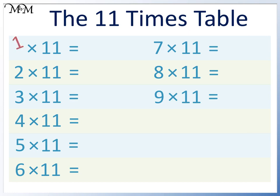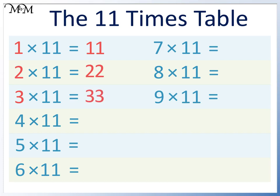To do 1 times 11, we repeat 1 twice. 1 times 11 equals 11. In 2 times 11, we repeat 2 twice. 2 times 11 equals 22. 3 times 11 equals 33. 4 times 11 equals 44. 5 times 11 equals 55.